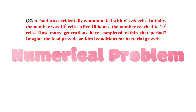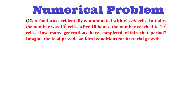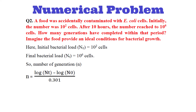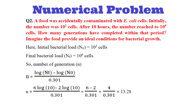Let's solve another numerical problem. A food was accidentally contaminated with E. coli cells. Initially the number was 10² cells, and after 10 hours the number reached 10⁶ cells. How many generations have completed within that period? Two pieces of information are provided: initial bacterial load N₀ = 10² cells, and final bacterial load Nt = 10⁶ cells. Using our equation: n = (log Nt − log N₀) / 0.301 = (6 log 10 − 2 log 10) / 0.301 = (6 − 2) / 0.301 = 4 / 0.301 = 13.28. So 13 generations have completed and they are preparing for the 14th generation — the answer will be 13.